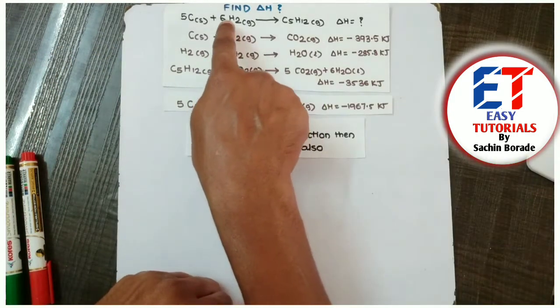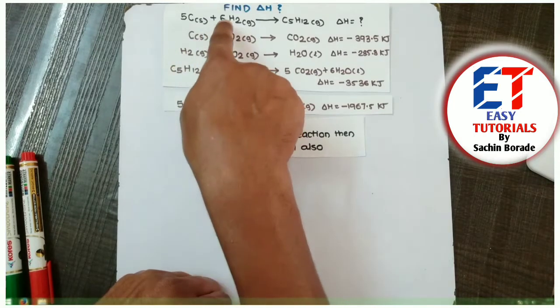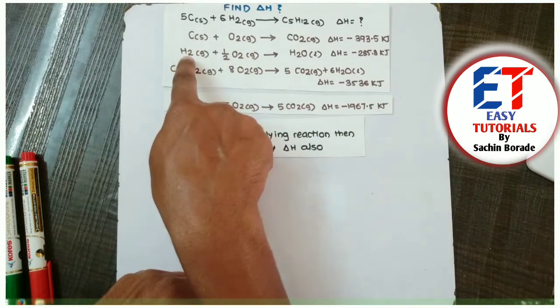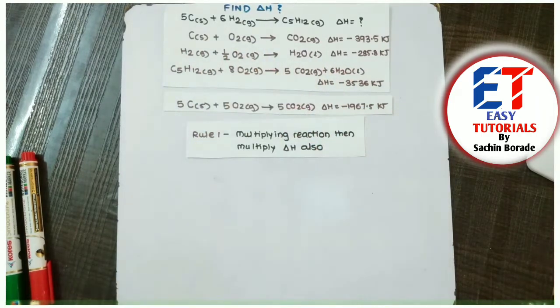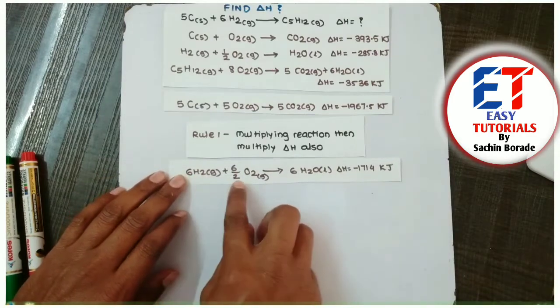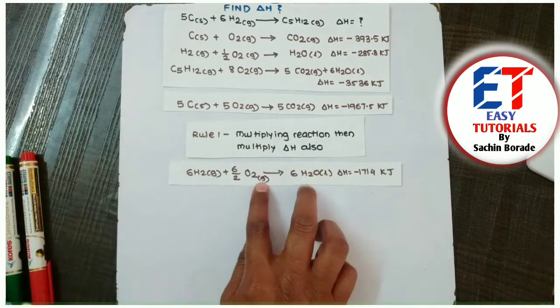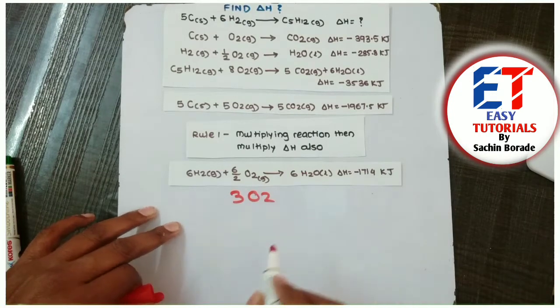So next, next reactant 6SO2. We have to find out the SO2. Here is 1SO2. Here are 6SO2. Then we have to multiply it by 6. All reaction to be multiplied by 6. Then our reaction will be like this: CS2 gas, 6 by 2, we can write it as 3O2 for that matter.